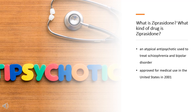Ziprasidone was approved for medical use in the United States in 2001. The pills are made up of the hydrochloride salt, Ziprasidone hydrochloride. The intramuscular form is the mesilate, Ziprasidone mesilate trihydrate, and is provided as a lyophilized powder. In 2020, it was the 282nd most commonly prescribed medication in the United States, with more than 1 million prescriptions.